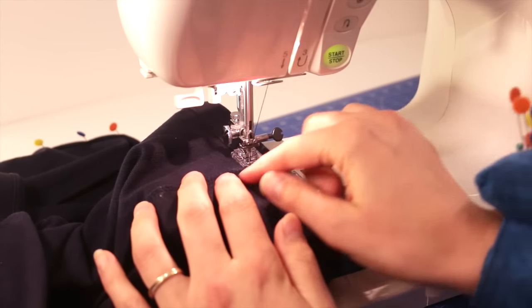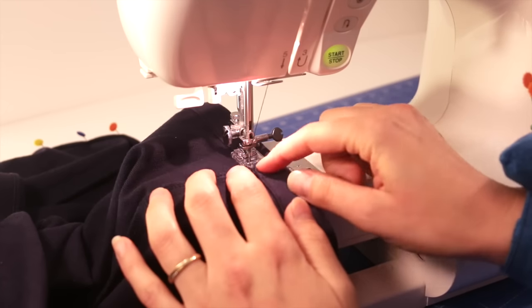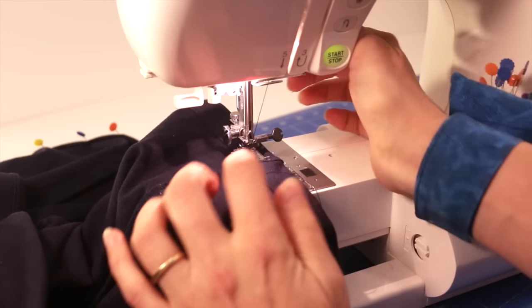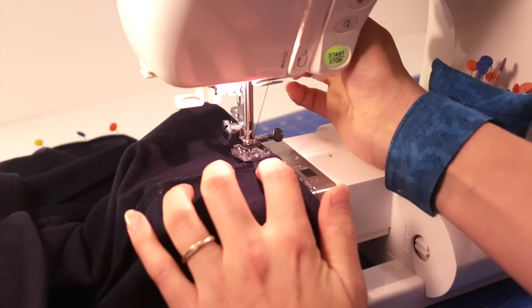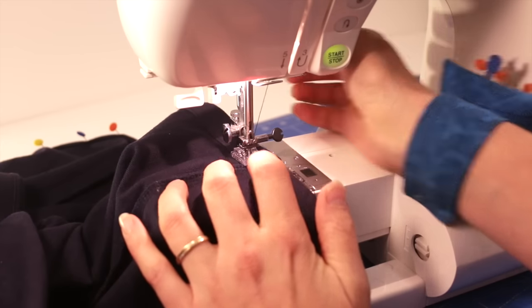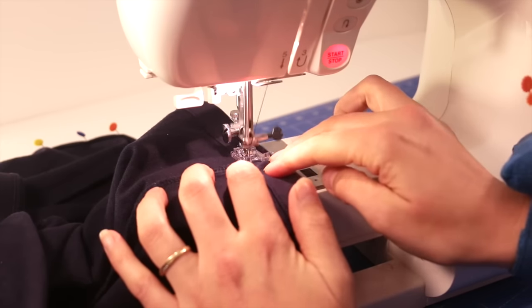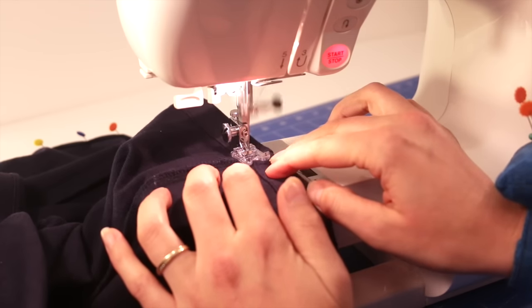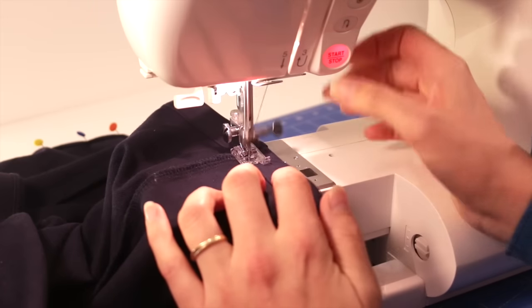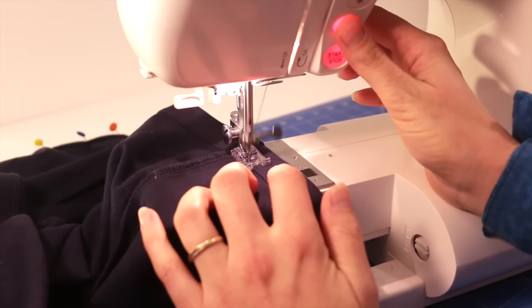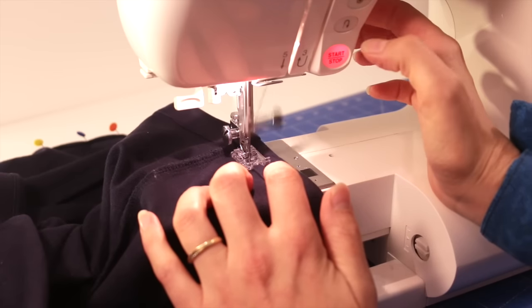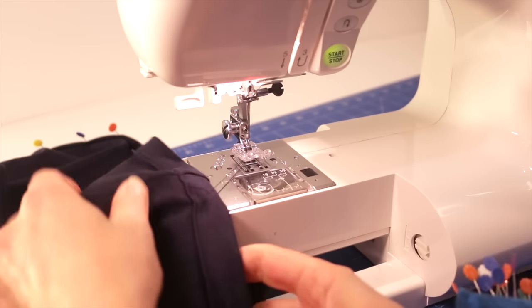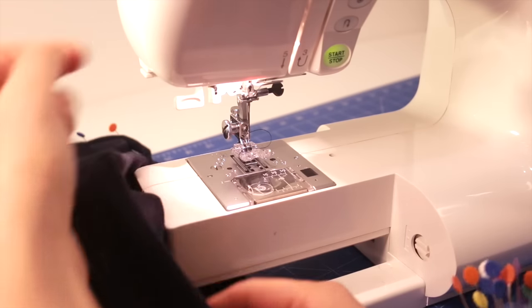These bulky seam parts can be a little bit tricky to get under the presser foot. So what I like to do is with the needle in the down position, sometimes you might need to lift the presser foot up and just push that bulky seam under the presser foot a bit just to try and encourage it through there. So I've gone all the way around now. So I'm going to do my back stitch just to secure that in there. And that leg is pretty much done.